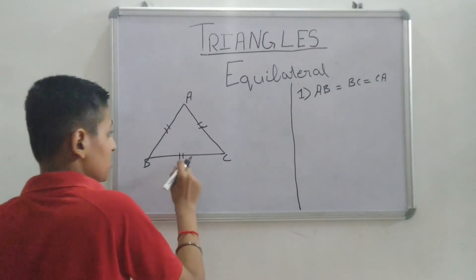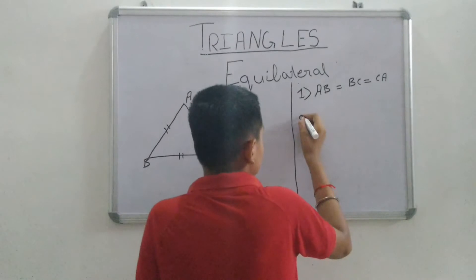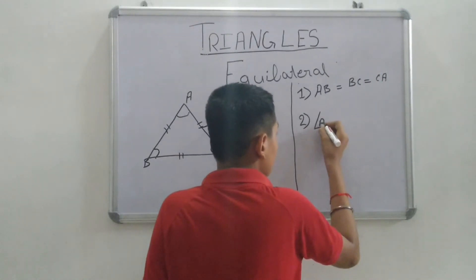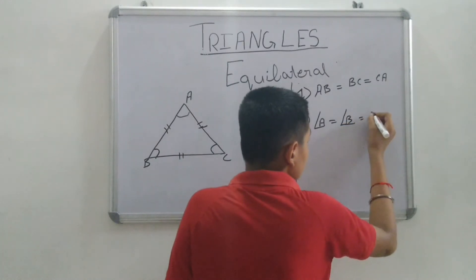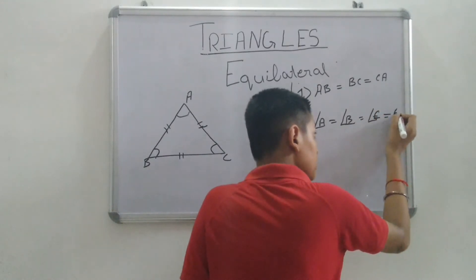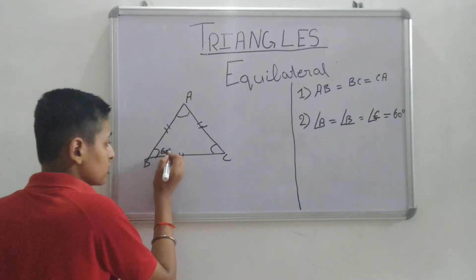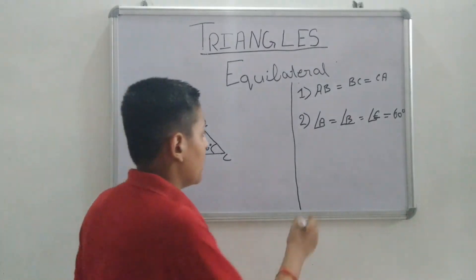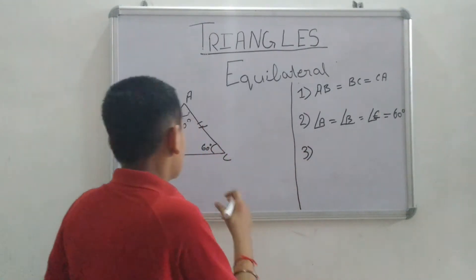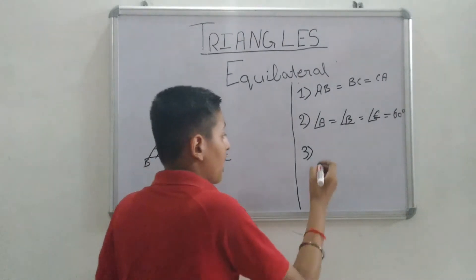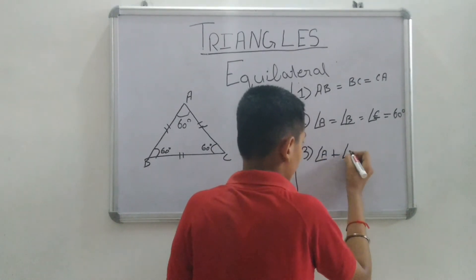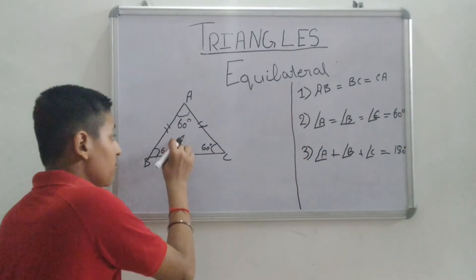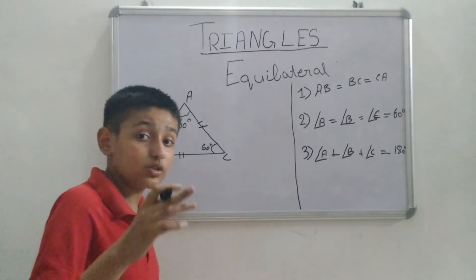AB equals BC, and BC equals CA. Second property: all the angles are equal. Angle A equals angle B equals angle C, each equal to 60 degrees. This triangle has all angles of 60 degrees. Third, the sum of all angles: angle A plus angle B plus angle C equals 180 degrees.